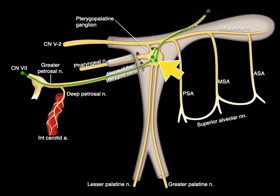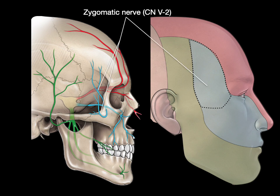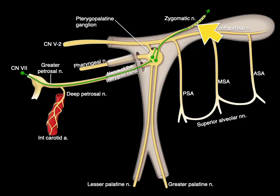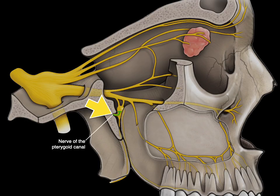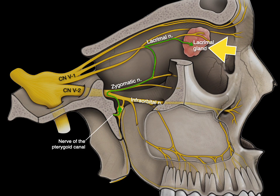This is how cranial nerve 7 gets parasympathetics to parts of the face and head: these parasympathetics hitchhike on branches of V2. For example, the zygomatic branch of V2 gives rise to the zygomatic nerves, providing sensation to the lateral face through zygomatic facial and zygomatic temporal branches. But also, parasympathetics hitchhike on the zygomatic nerve and go to the lacrimal gland. The nerve of the pterygoid canal synapses with postganglionic parasympathetics in the pterygopalatine ganglion, and then those postganglionic parasympathetics jump onto branches of V2 through a communicating branch to branches of V1, providing parasympathetic innervation to the lacrimal gland. That's how cranial nerve 7 reaches the lacrimal gland.